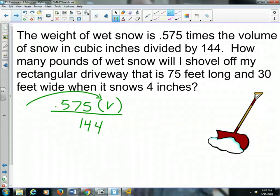It says, how many pounds of wet snow will I shovel off my rectangular driveway that is 75 feet long, 30 feet wide, when it snows 4 inches. So if you can kind of picture, here's my driveway. It's 75 feet long and it's 30 feet wide and it snows 4 inches. So what I would want to do here, it's a rectangular prism, so the volume equals the area of the base multiplied by the height. The height is 4 inches. The base is a rectangle, the area of the base, so it's base times height.